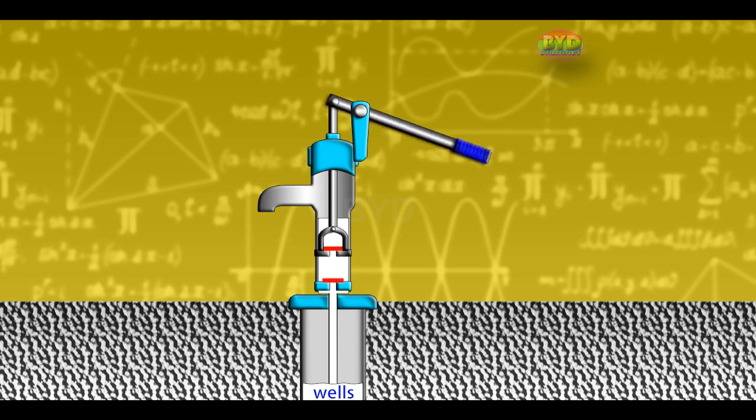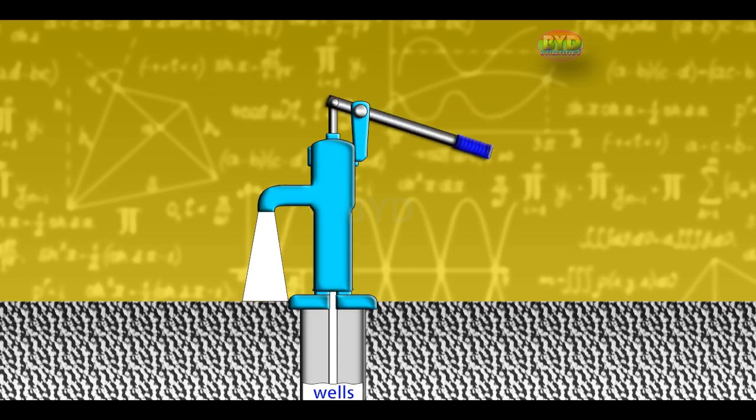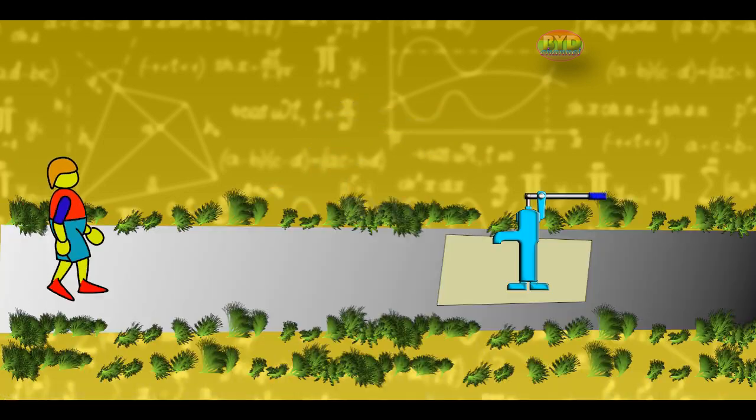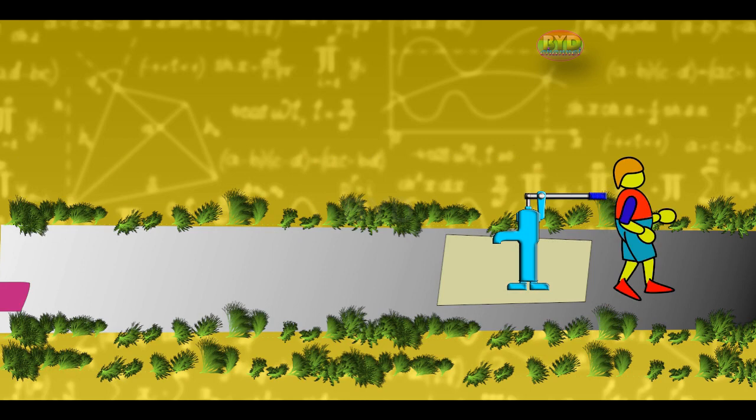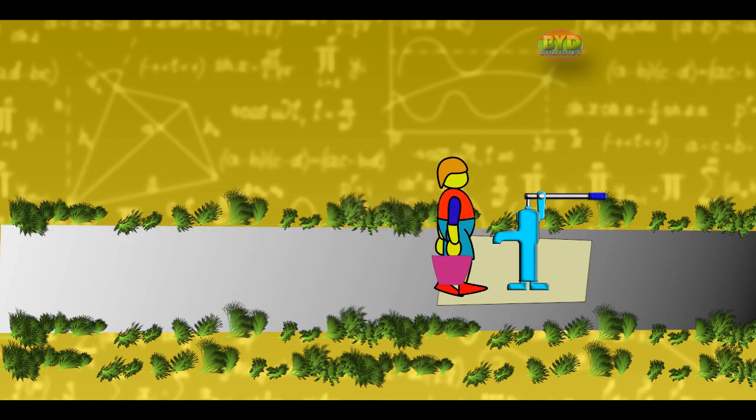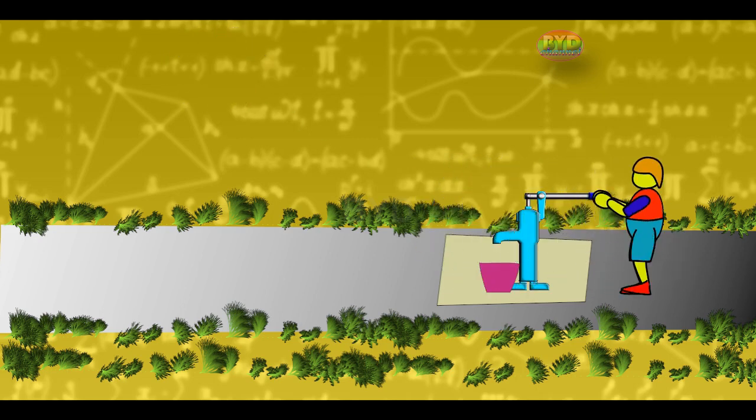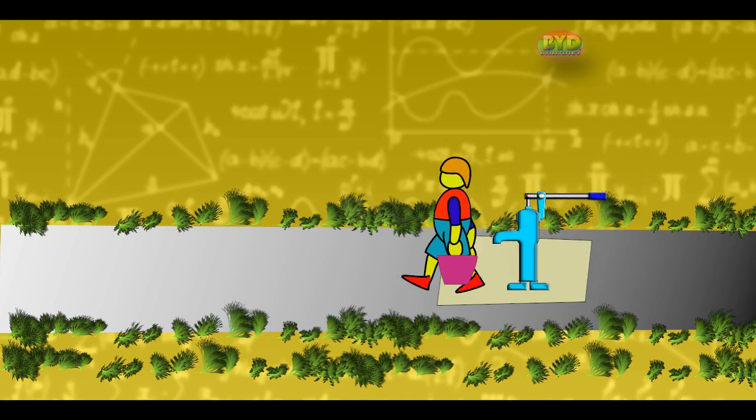Consequently, the water comes out through the upper valve hole until excess water comes out through the water outlet. Thank you.